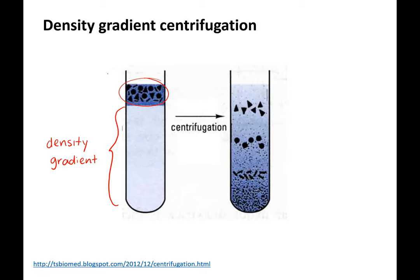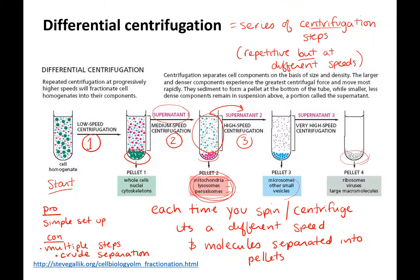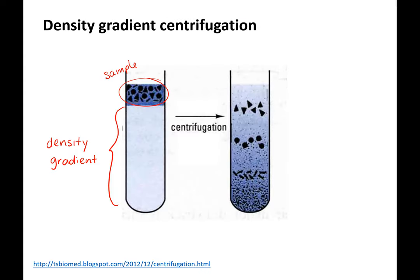Density gradient centrifugation is a little bit different. Your sample is placed in a density gradient liquid. In differential, you have your sample all mixed up and you spin, spin, spin and collect pellets. In density gradient centrifugation, you have material going from very dense to less and less dense. A lot of times this is what we call a sucrose gradient — sucrose is sugar.